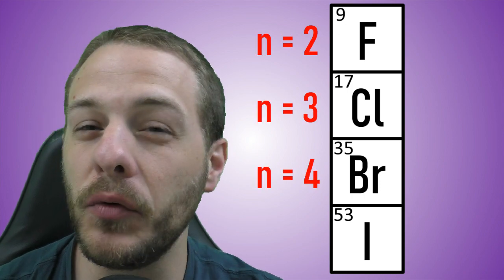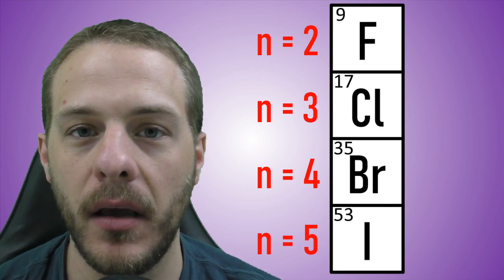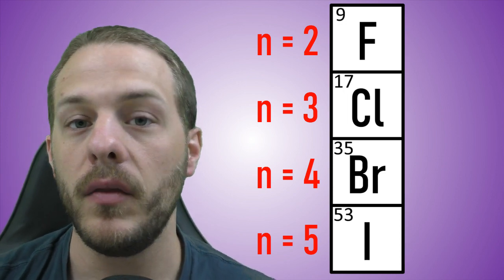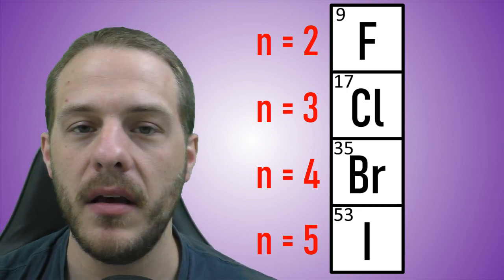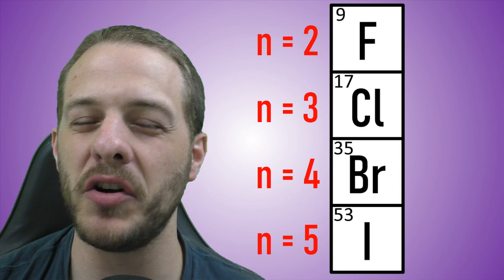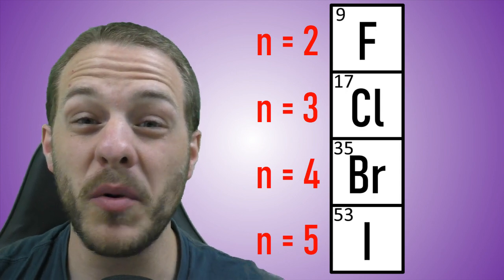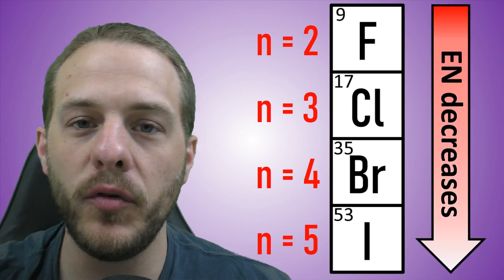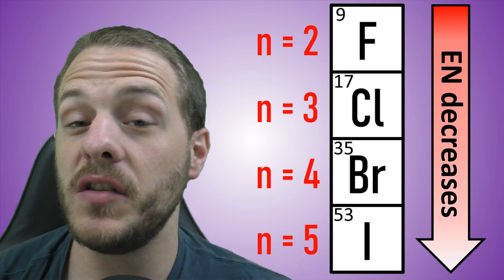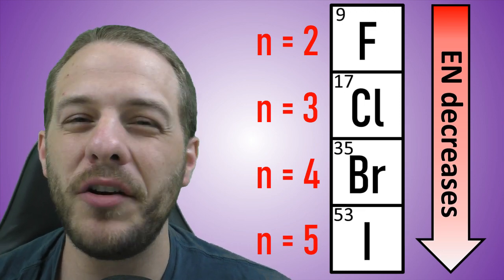Consider the halogens fluorine, chlorine, bromine, and iodine, and their positions in the periodic table. The valence electrons in atoms of fluorine, chlorine, bromine, and iodine are located in orbitals in the n = 2, n = 3, n = 4, and n = 5 principal energy levels respectively, where n is the principal quantum number. As the principal quantum number increases from 2 to 3 to 4 to 5, the orbitals get successively larger and further away from the nucleus. Since the higher principal energy level valence electrons are located further away, there isn't as much attractive force between the nucleus and the valence electrons. As a result, electronegativity tends to decrease as you move down a group of the periodic table — the atoms get much bigger and the distance between the nucleus and the valence electrons becomes larger, causing a weaker attractive force between them.